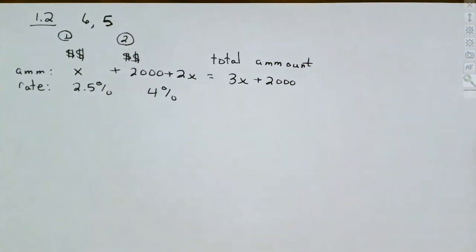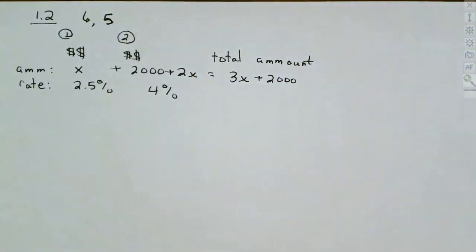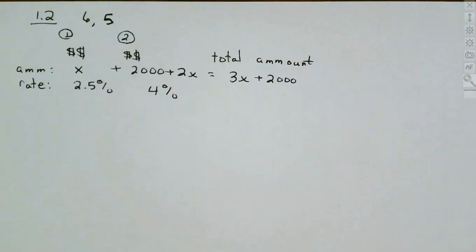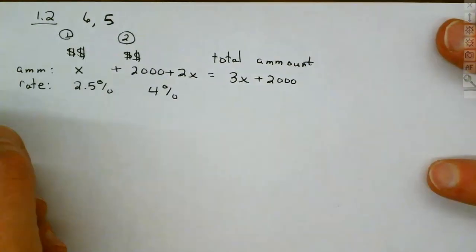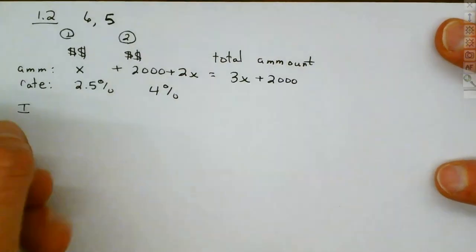Do not put the interest — the $1,445 — in the total amount column. That is the interest, not the amount. Think about it like a bank account: if you have $10,000 in an account and make $10 in interest, those are different things. The $1,445 is the interest, so we'll use it when we build the equation from the interest column.